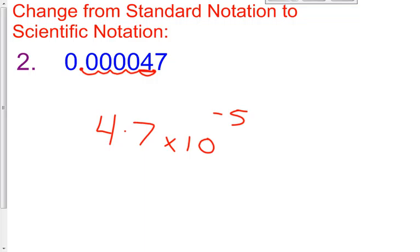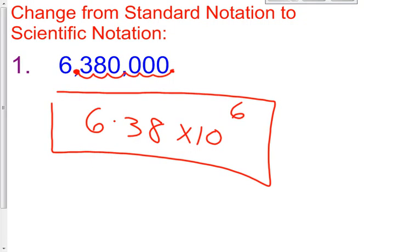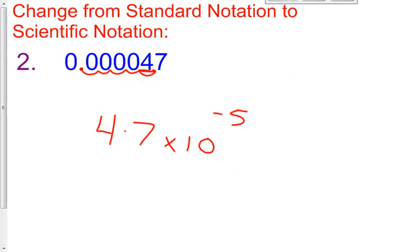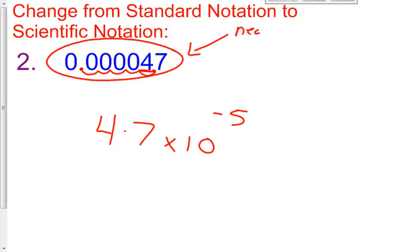So as you can see, if your number is a very large number — 6 million is a relatively large number — you're going to have a positive exponent. If your number in standard notation is a small number, as this one clearly is, you are going to have a negative exponent when you put it into scientific notation.